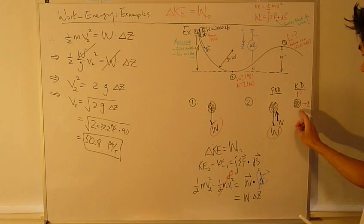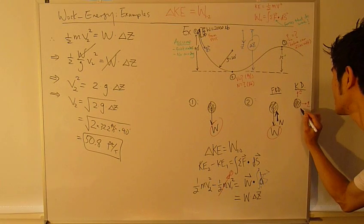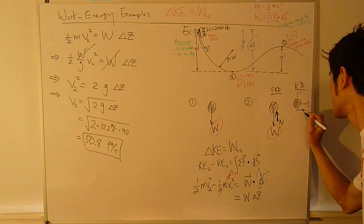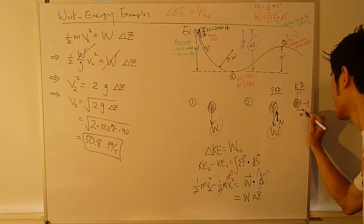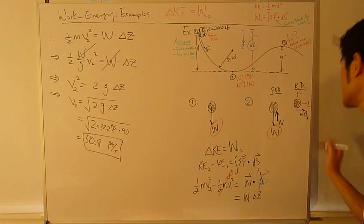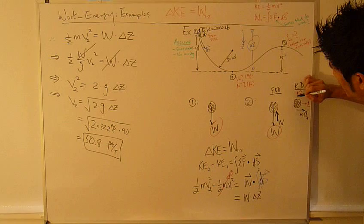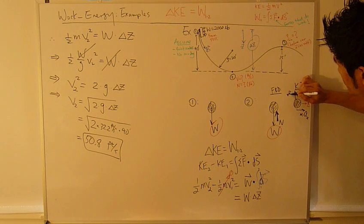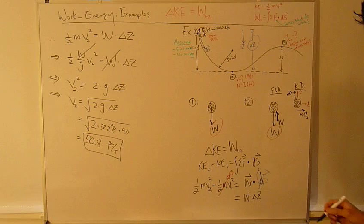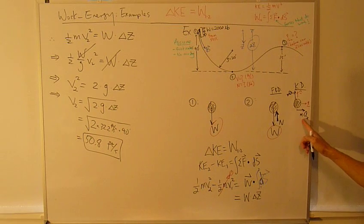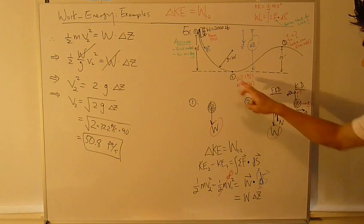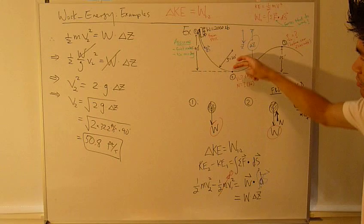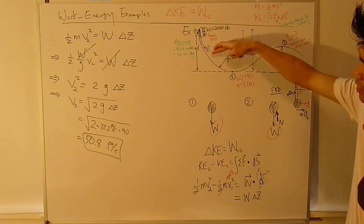The tangent component of acceleration is going this way. I'm going to write the whole term M-A-T. And then the normal component. M-A-normal component. This tangent component. Part of this is this bottom position. What is it?